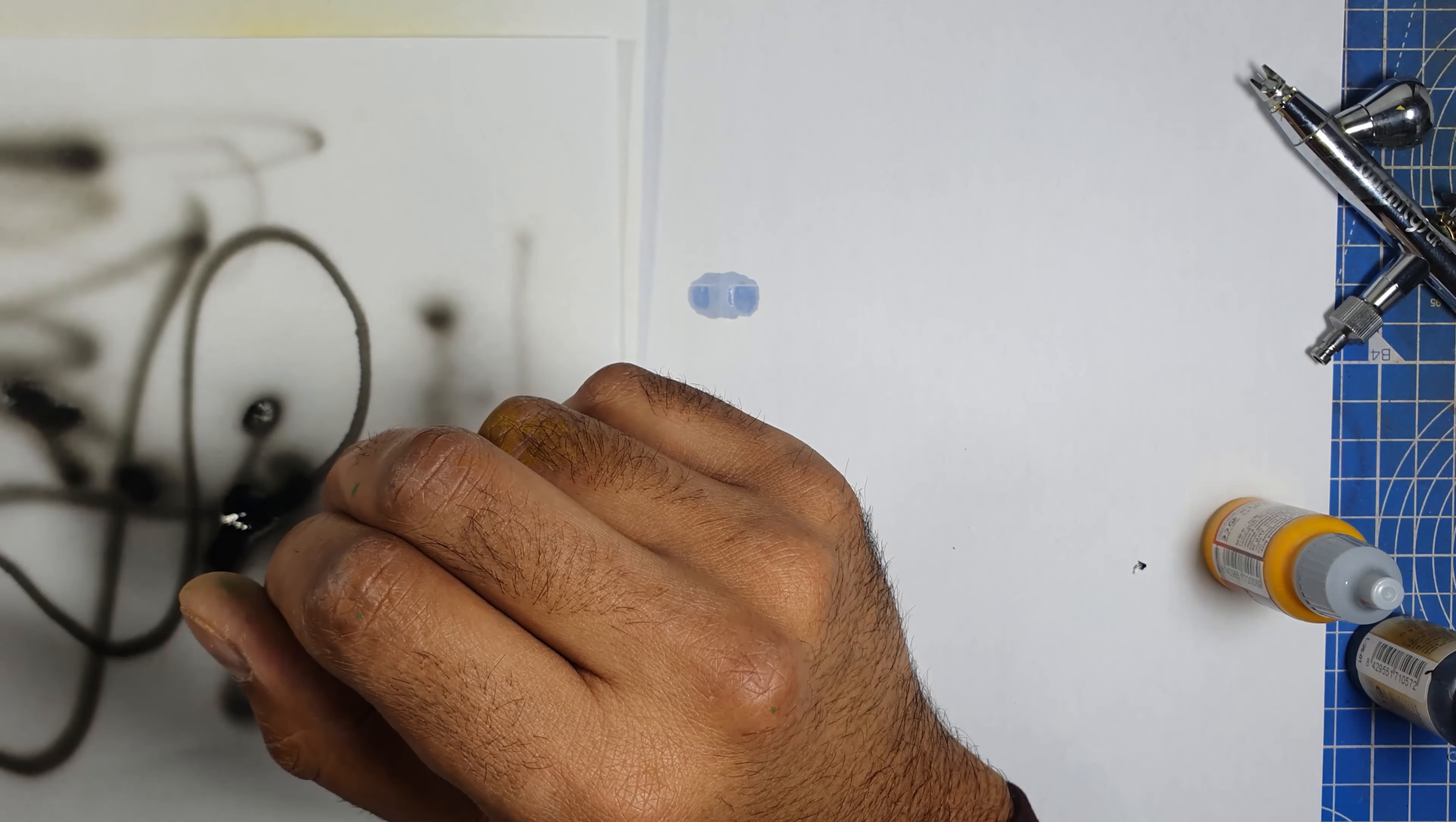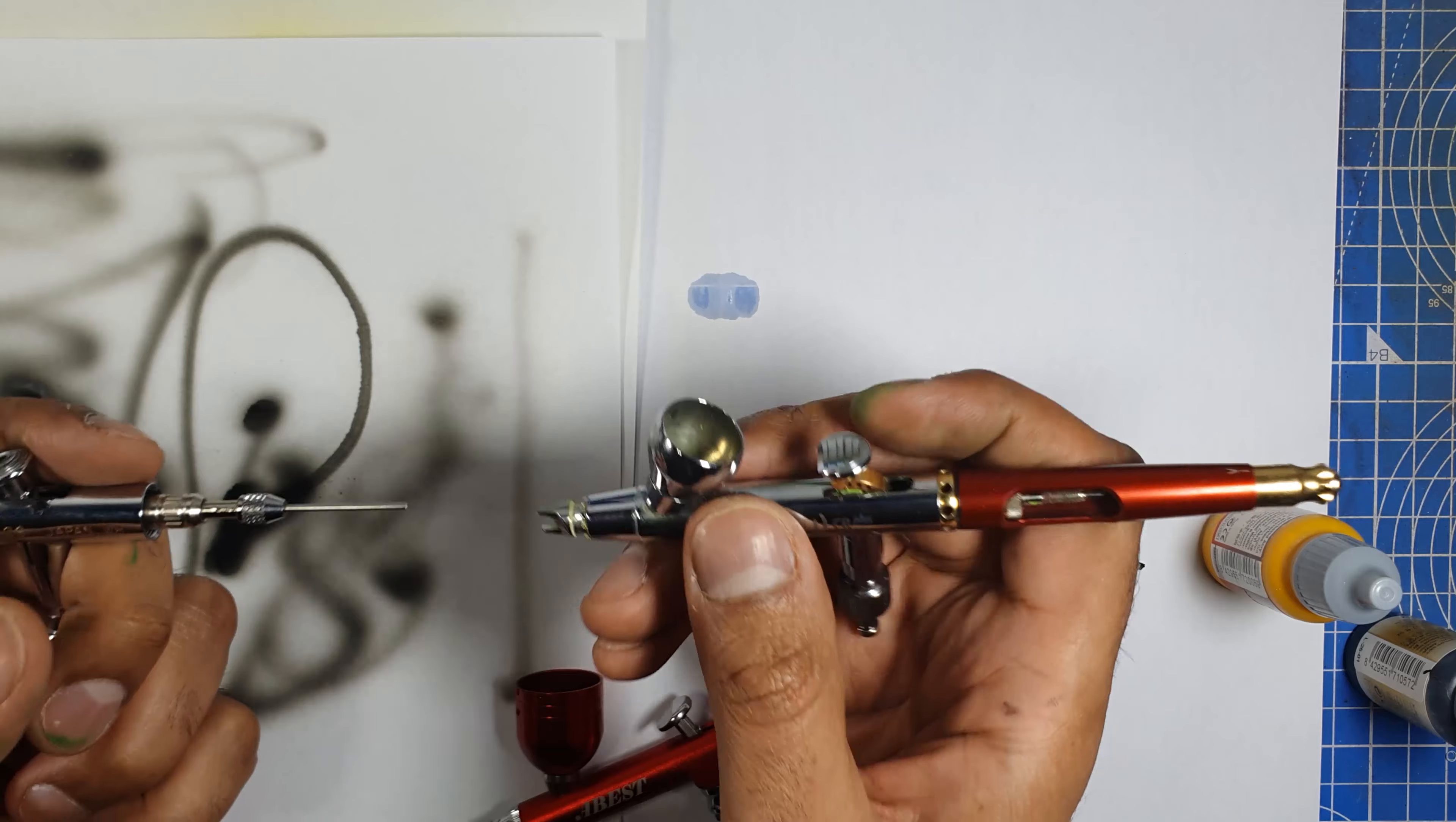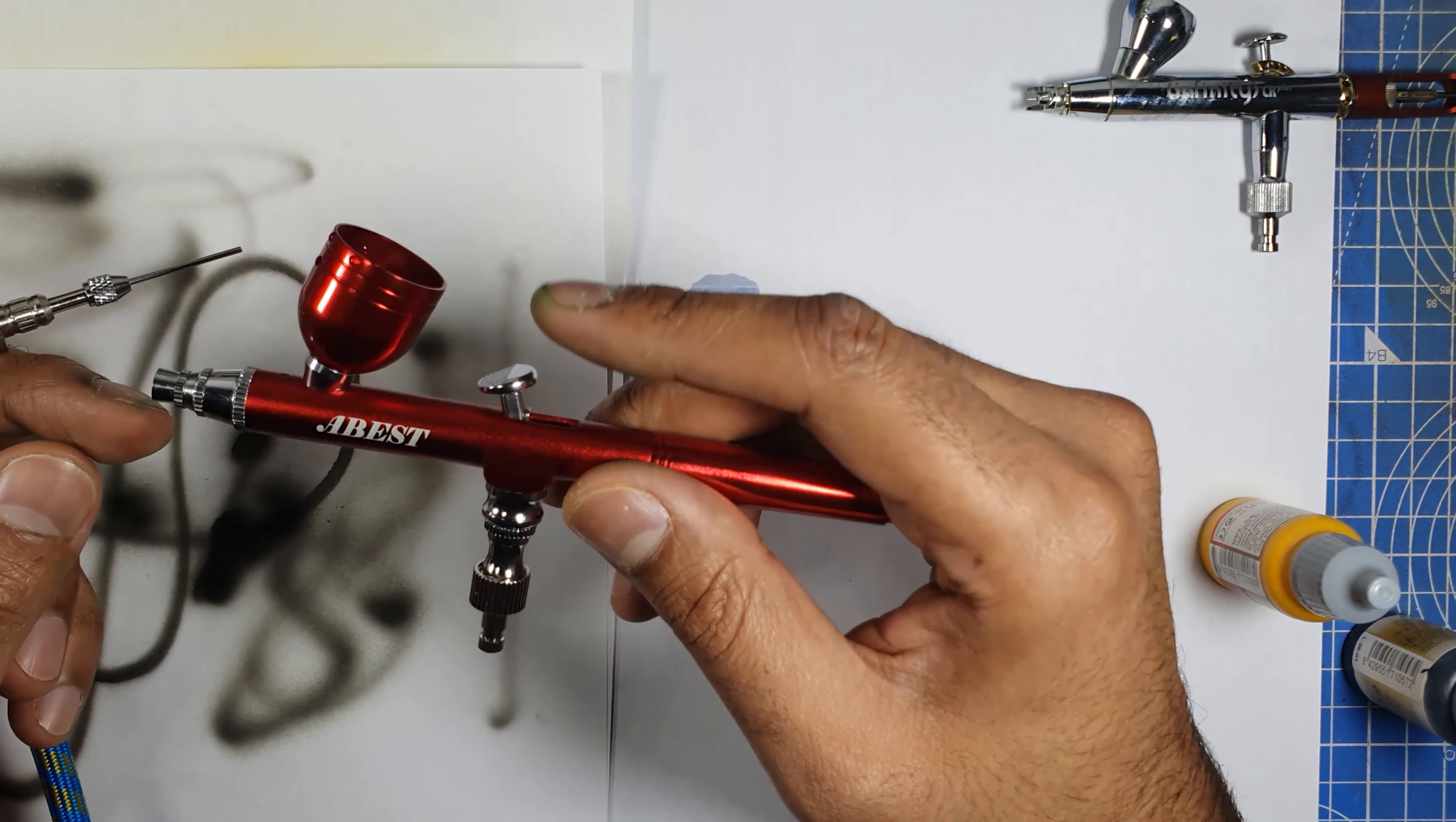So I just wanted to show you a little example of a budget one. Now this one, the thing you'll notice with the budget one is, obviously it doesn't feel like when you hold it, it doesn't feel solid, like the Infinity or the Iwata. You can tell these things are made with a lot of precision and that's why it's obviously a lot more money. But if you're starting out, if you're on a budget, this is good. But if you can find one similar to this that has dual action, I would probably recommend that more because there's more control with that. Because as soon as you press this down, the paint comes out. And personally, I don't think that's, for me, it's not ideal for miniature painting because you want to have a bit more control.